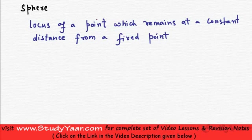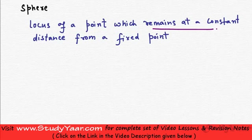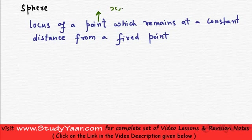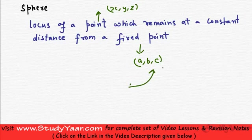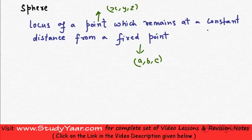Let's learn about sphere now. We define sphere as a locus of a point. It is an arbitrary point which remains at a constant distance from a fixed point. Let us just suppose my arbitrary point is x, y, z and my fixed point is a, b, c. A, b, c are not my direction ratios — it is any fixed point. The definition of sphere says the distance between these two points always remains constant.